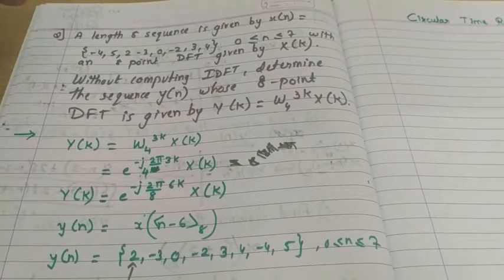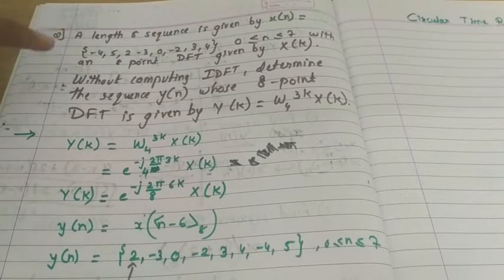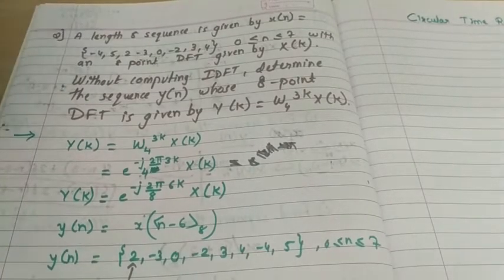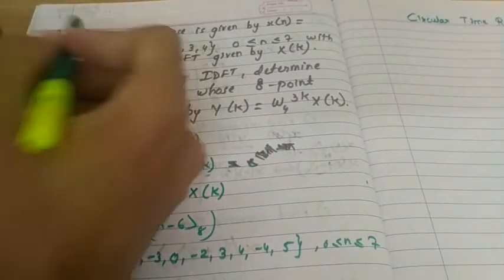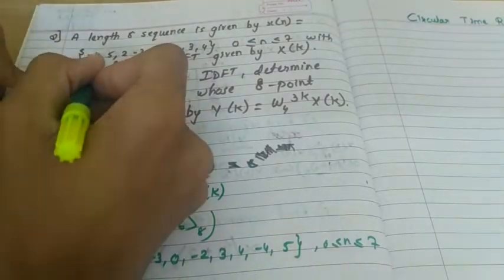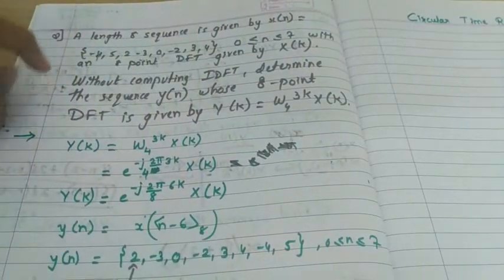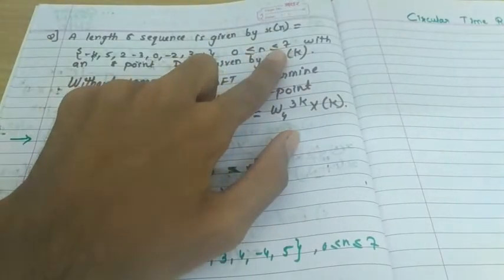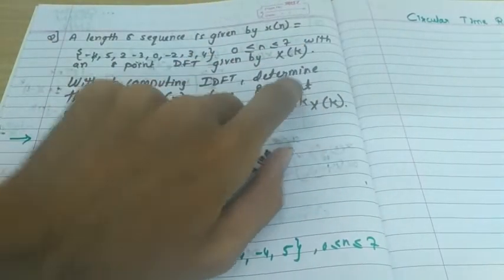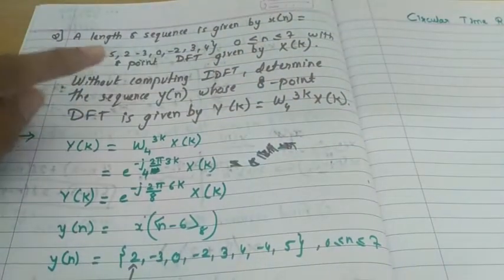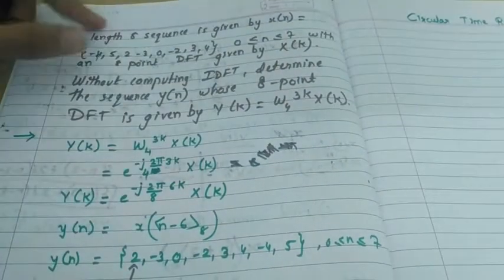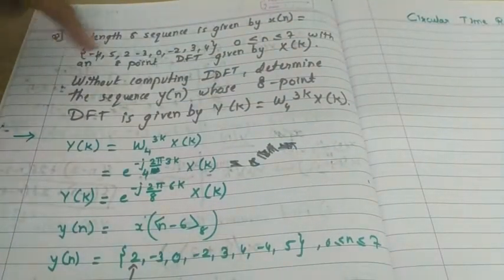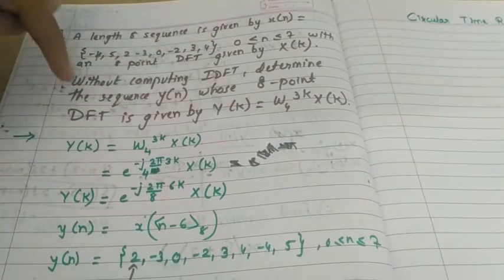In this video we will discuss a question where a length-8 sequence is given. This is an 8-point sequence indexed from 0 to 7, and it has an 8-point DFT X of k. The question says: without computing the IDFT, determine the sequence y of n whose 8-point DFT is given by a certain relation between Y of k and X of k.